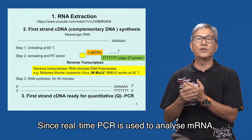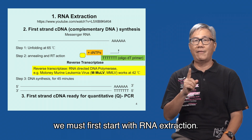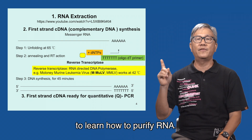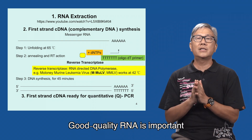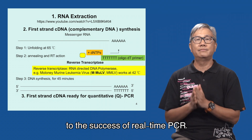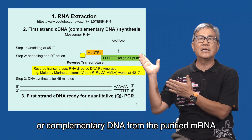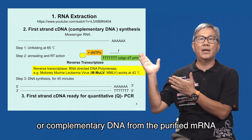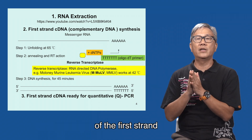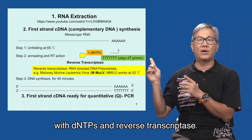Since real-time PCR is used to analyze mRNA, we must first start with RNA extraction. You can watch a video online to learn how to purify RNA. Good quality RNA is important to the success of real-time PCR. The next step is the synthesis of first-strand cDNA, or complementary DNA, from the purified mRNA using an oligonucleotide primer to prime the synthesis of the first strand with dNTPs and reverse transcriptase.